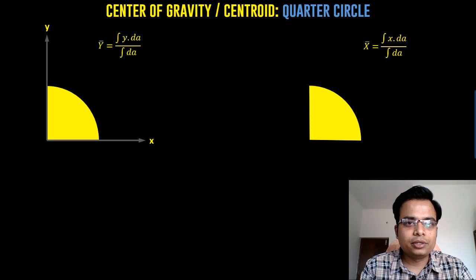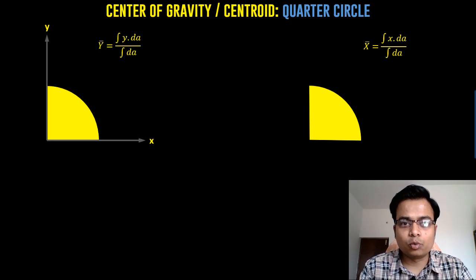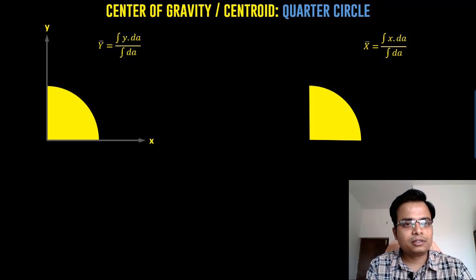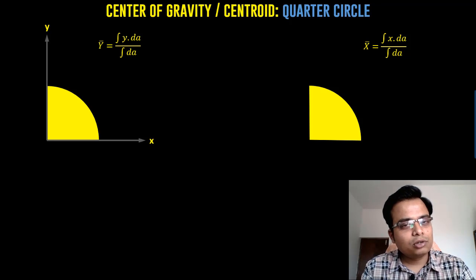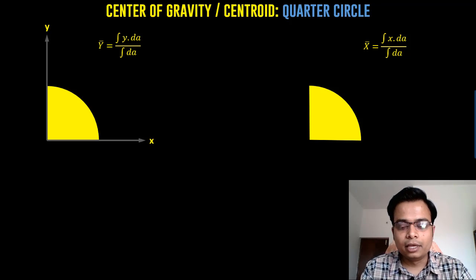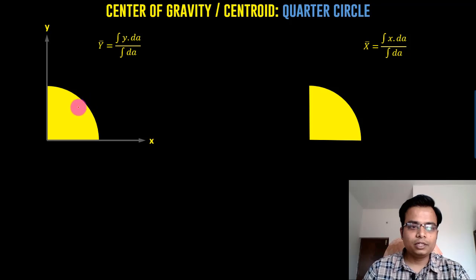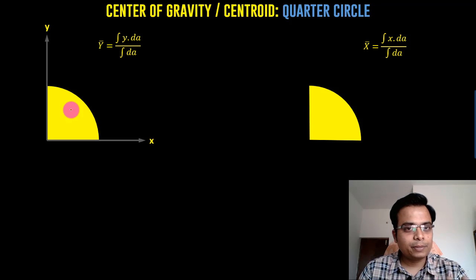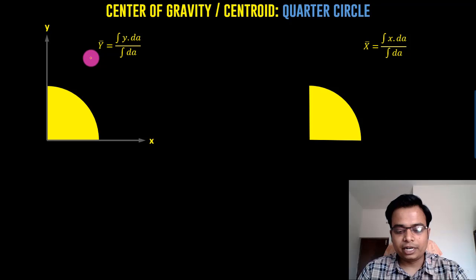Hi everyone, this is Manas, your friend and tutor. In this video we'll work out the coordinates of the centroid of a quarter circle. This is going to be very interesting. If you've seen the previous problems, you must have identified that all the plane figures dealt with before were symmetrical about either the x-axis or the y-axis. In this case, the figure is neither symmetrical about the x-axis nor the y-axis, so this is going to be a pretty long approach and we have to calculate both coordinates individually.